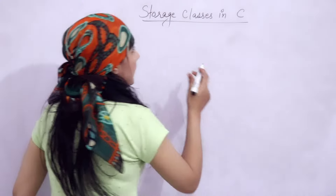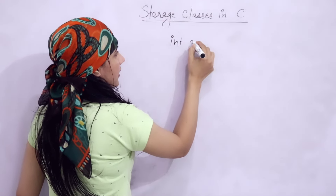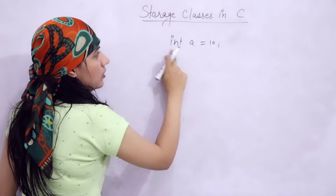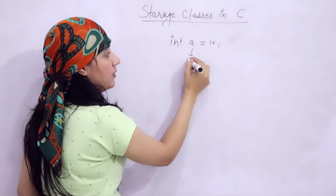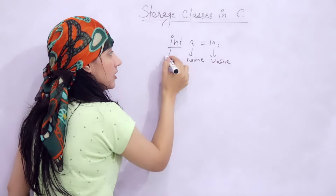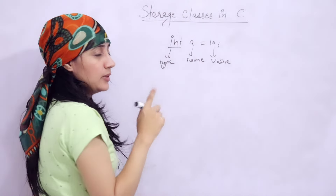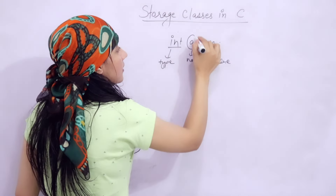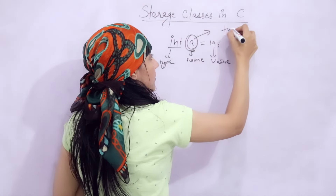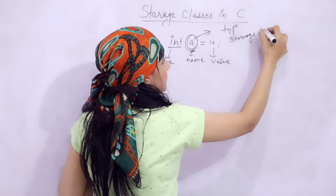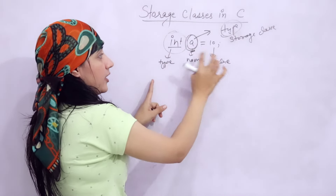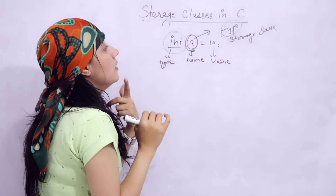Now let's see what storage classes are in C. When we declare a variable like 'int a = 10', this line tells us three things: the name of the variable is 'a', the value stored is 10, and the data type tells what type of value can be stored. So a variable is associated with basically two things: its type and its storage class.